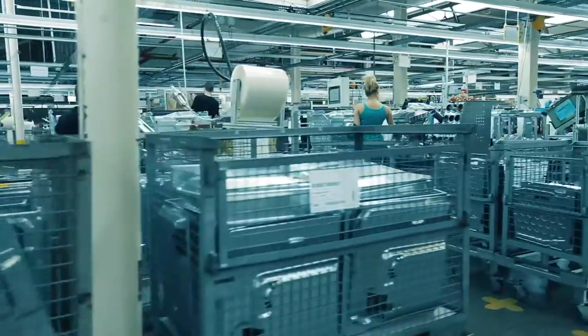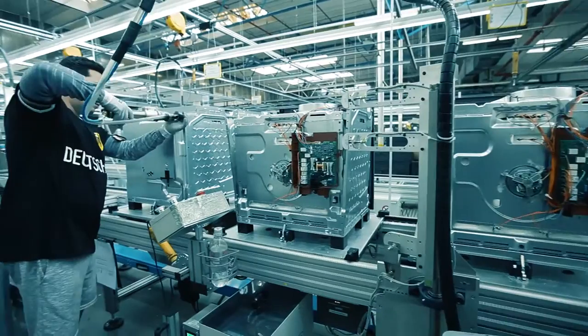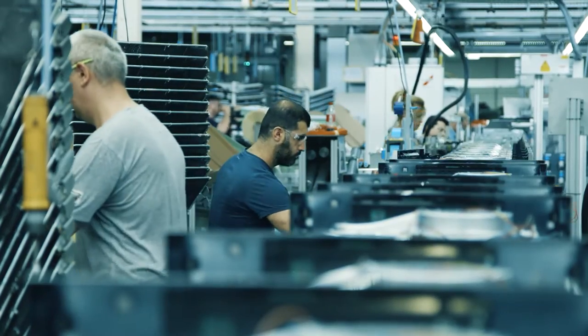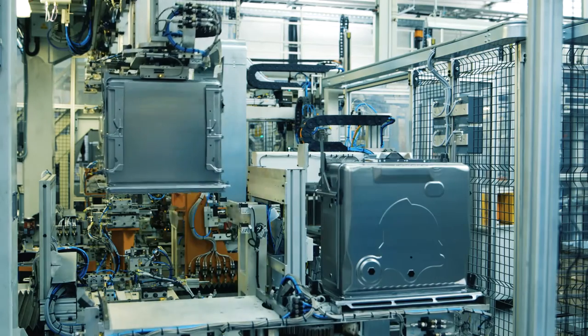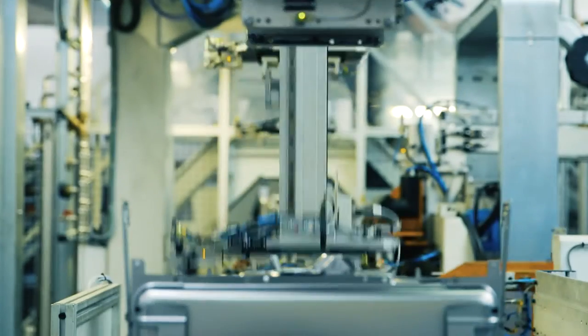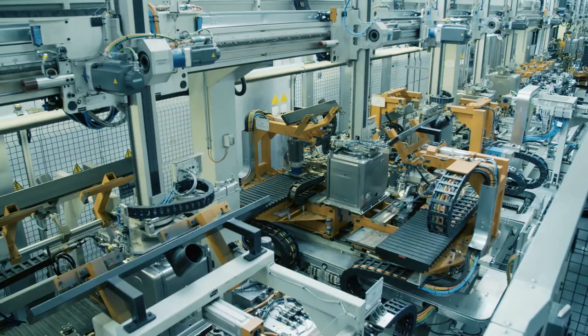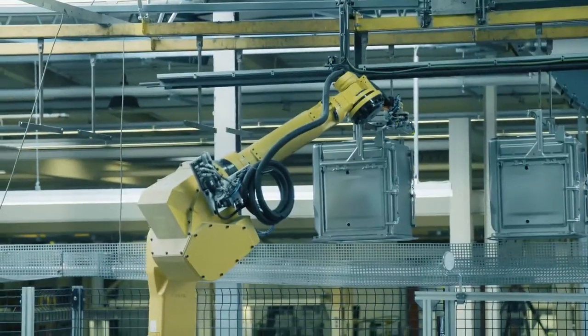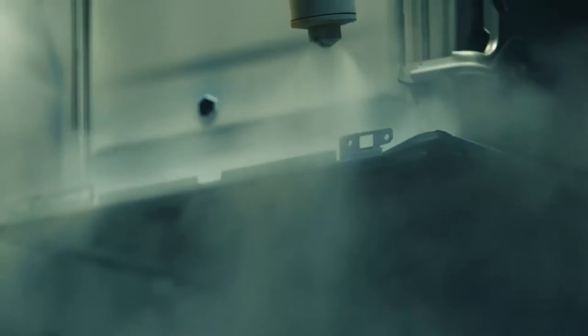Cookers, ovens and extractor hoods are made into high-quality finished products on 21 assembly lines. The factory relies on flexible, time-saving automation, such as its innovative oven cavity welding system, as well as its oven and flatware enamelling station.